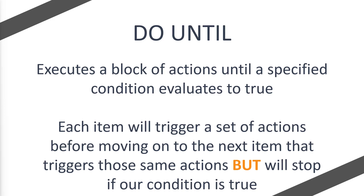Before we move to that next set of actions, we're going to check a condition. So let's say we've got a variable called 'number' set to zero, and we want to check if zero is equal to two. Does zero equal two? No — run this set of actions. Then we add one, so number becomes one. Does one equal two? No — run the actions again. Add another one, so now number is two. Does two equal two? Yes — so we stop. Unlike Apply to Each, where it cycles through everything, we can set a particular value to stop at. This is a way of iterating through data.